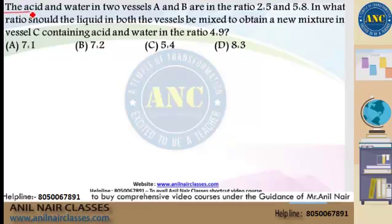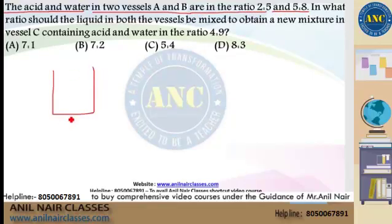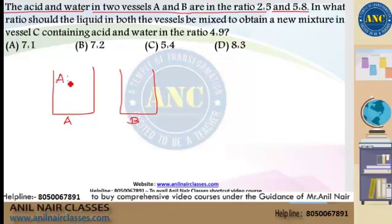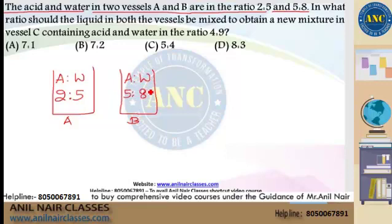The acid and water in two vessels A and B are in the ratio 2:5 and 5:8 respectively. In the first vessel, the acid and water ratio is 2:5, and in the second vessel, the acid and water ratio is 5:8.